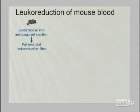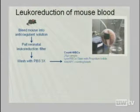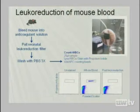We model leukoreduction of mouse blood in my lab using the same filters used on human blood. We exsanguinate mice into CPDA1 and pass them over a Pall neonatal leukoreduction filter, then wash the blood and enumerate leukocytes via propidium iodide-based assay and flow cytometry. After leukoreduction it drops down to almost undetectable levels — fewer than 500 leukocytes per murine unit — which is an equivalent log reduction to what you would see in human units.